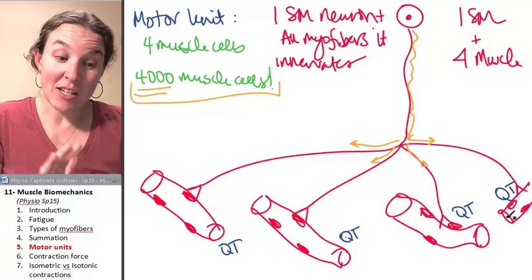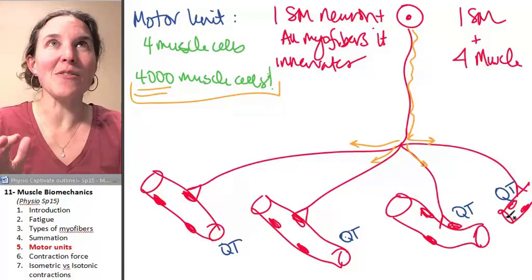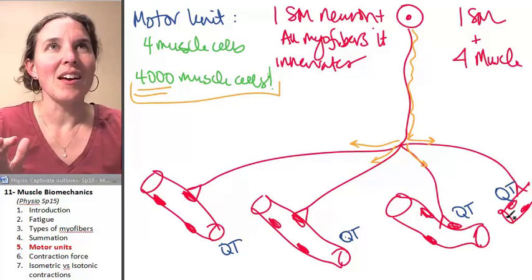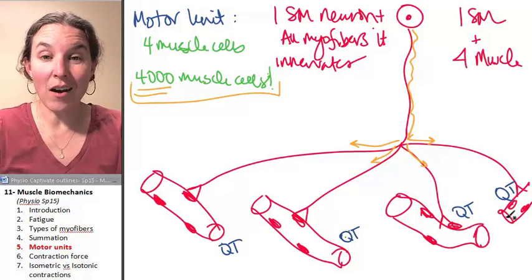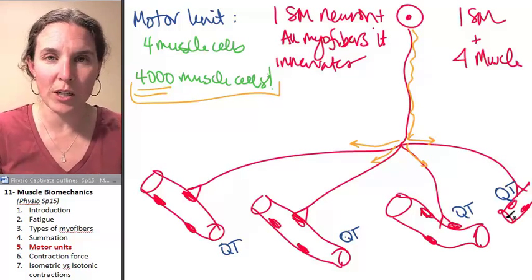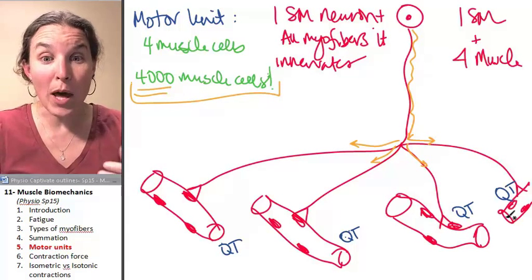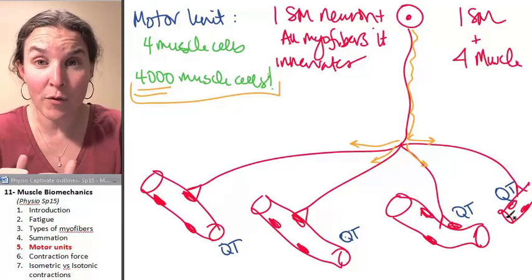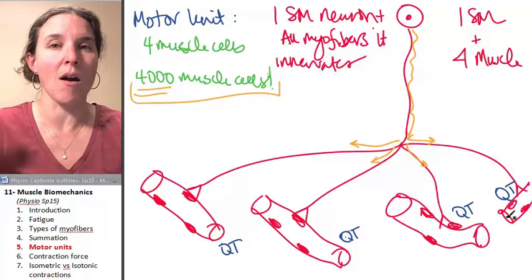You can have different percentages of motor units, like you can have half your motor units quick twitch and half your motor units slow twitch, but all your myofibers in one motor unit are the same.